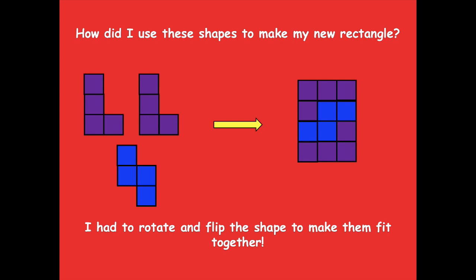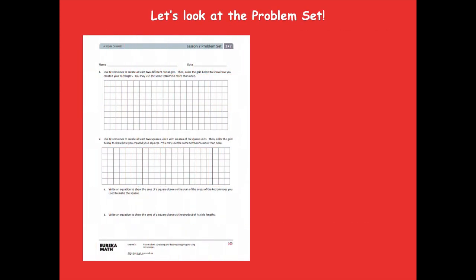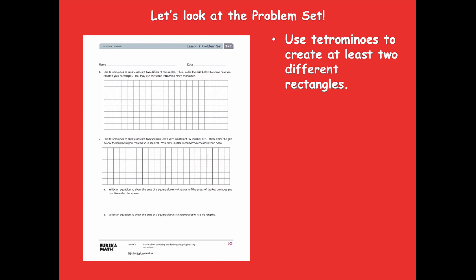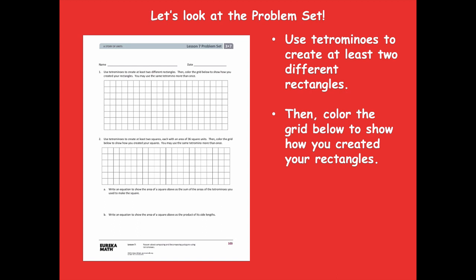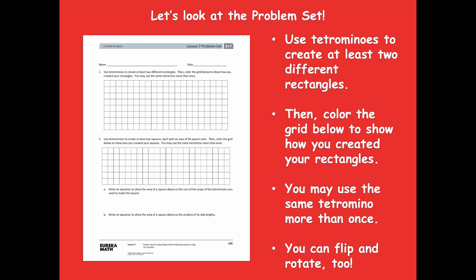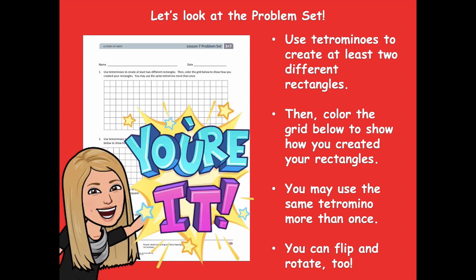You're allowed to rotate and flip. They don't have to stay the same way that you first cut them out — flip them, move them around. So let's look at the problem set. You're going to use the tetrominoes to create at least two different rectangles, then color the grid below to show how you created them. You may use the same tetromino more than once, and you can flip and rotate too. Use different colors so you can see the different tetrominoes that made each rectangle.